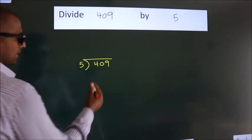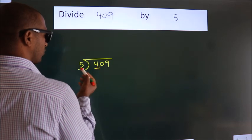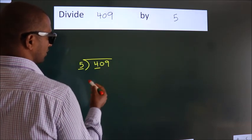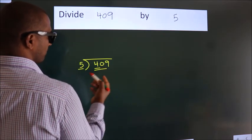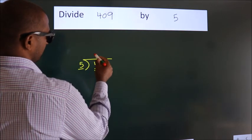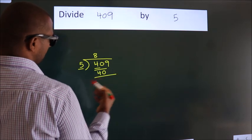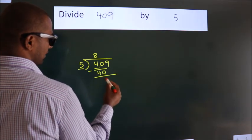Next, here we have 4, here 5. 4 is smaller than 5, so we should take two numbers: 40. When do we get 40 in the 5 table? 5 eights, 40. Now we should subtract. We get 0.